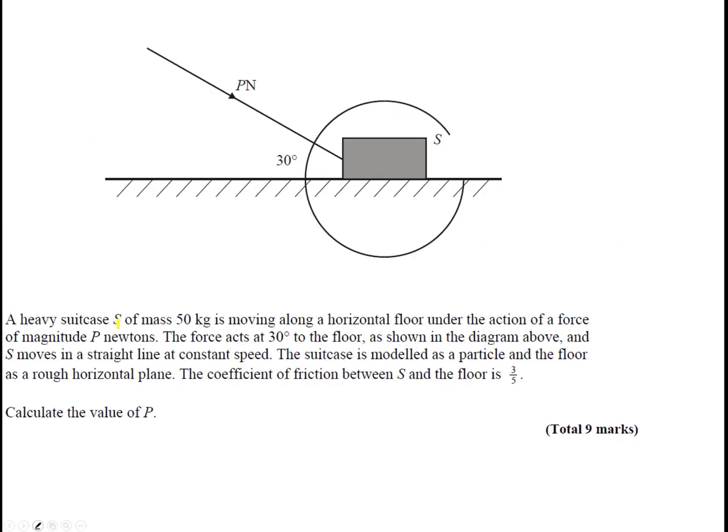Okay, so we have a heavy suitcase S of mass 50 kilograms. It's moving along a horizontal floor, so that means we resolve horizontally and vertically, under the action of force magnitude P newtons. That's the P newtons here. That acts at 30 degrees to the floor, and it's showing in the diagram above. And S moves in a straight line at constant speed. The suitcase is modeled as a particle, and the floor as a rough horizontal plane. If it's rough there's friction. And we have the coefficient of friction between S, the suitcase, and the floor is 3 over 5. Calculate the value of P. Now let's be very careful using 3 over 5 and not mistaking it for 4 over 5. So let's do some labeling.